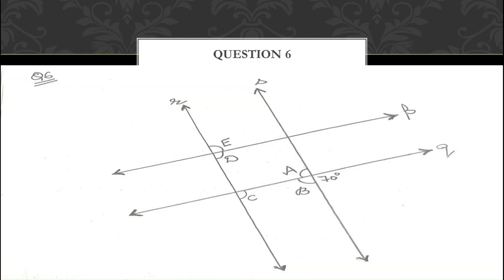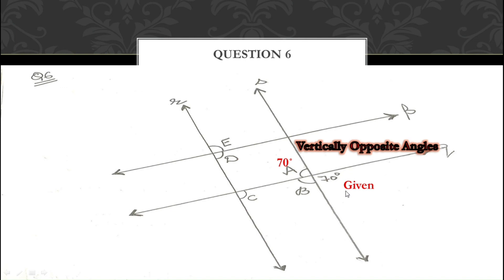Now let us move on to the last question, question number 6. Here parallel lines P and Q are given, and R and S are also parallel lines. One angle is given — 70°. Angle A = 70° because 70° and angle A are vertically opposite angles. Then angle C = 70° because angles A and C are alternate interior angles — they are in the interior region and cross each other.